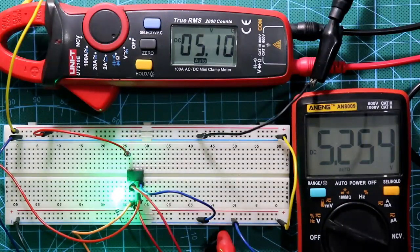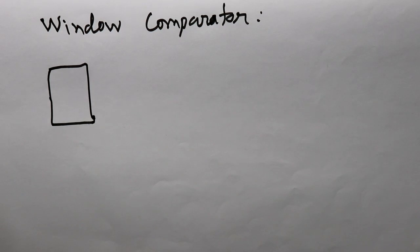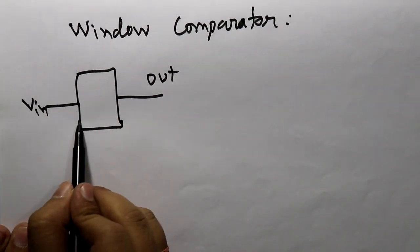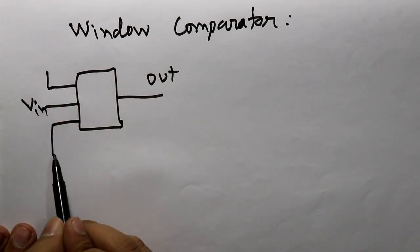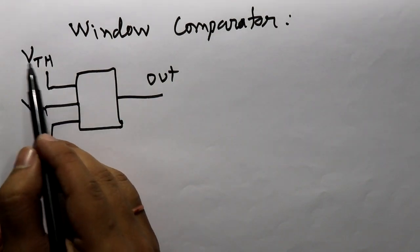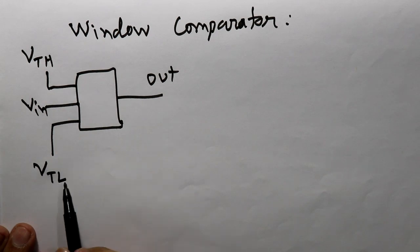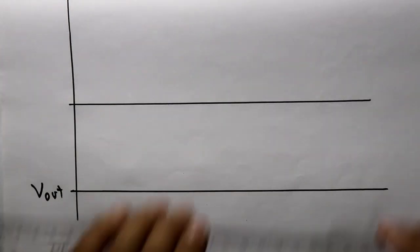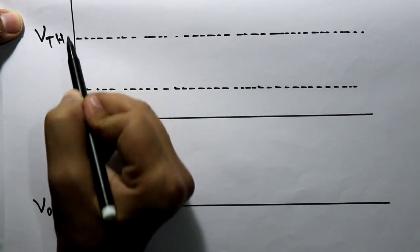Now let's see the window comparator. The window comparator has two reference voltages and one input voltage with one output. Looking at the block diagram, it has one output, one input, and two voltage references: the upper level V_TH — the higher threshold voltage — and the lower level V_TL — the lower threshold voltage. Let's see a graph to understand it easily.